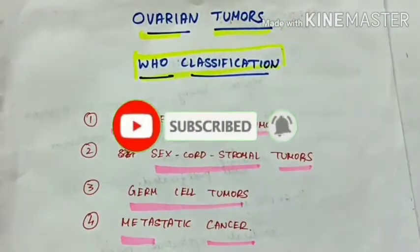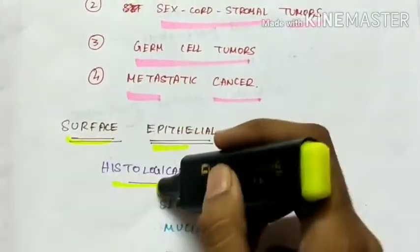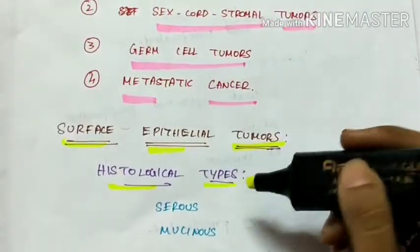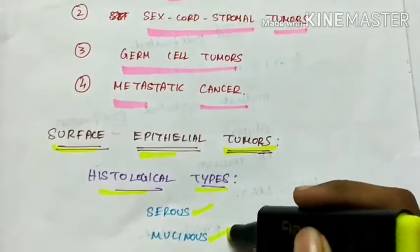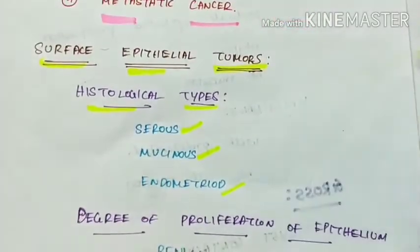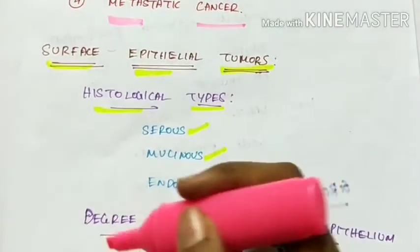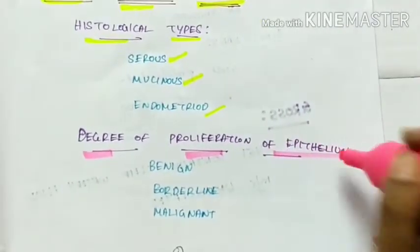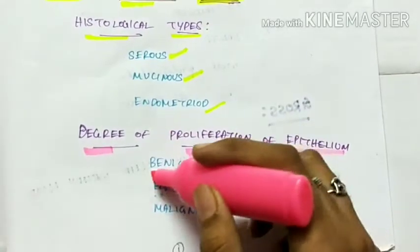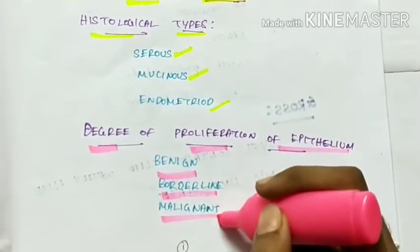First, let's see about the surface epithelial tumors. The histological types are serous, mucinous, and endometrioid types. The degree of proliferation of the epithelium can either be benign, borderline, or malignant.